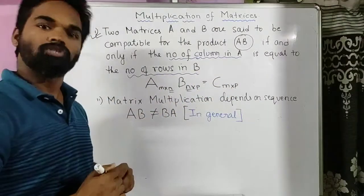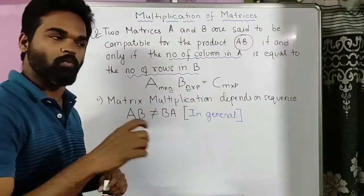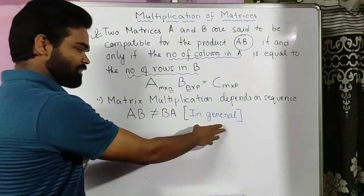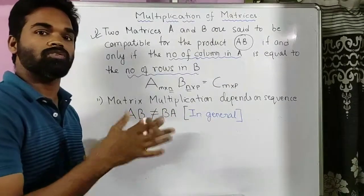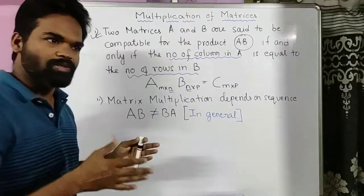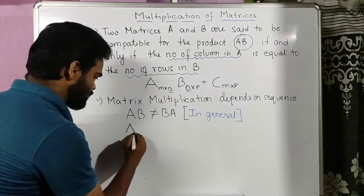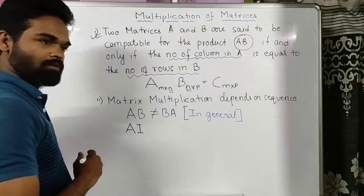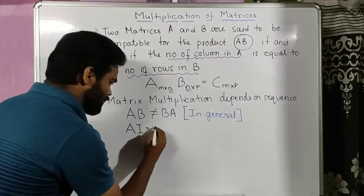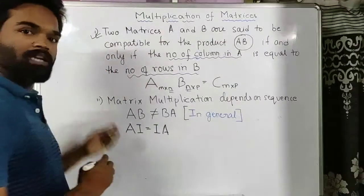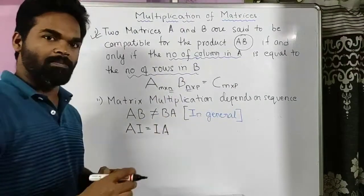Second thing: matrix multiplication depends on sequence. In general, AB is not equal to BA, which means matrix multiplication is not commutative. Though there are certain cases where they can be equal — for example, if you multiply a matrix with the identity matrix, provided they are compatible, then I×A will equal A×I. There are other cases where they may be equal, but in general AB is not equal to BA.